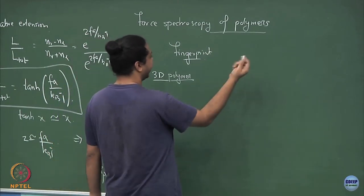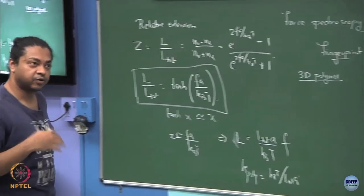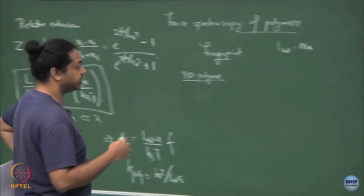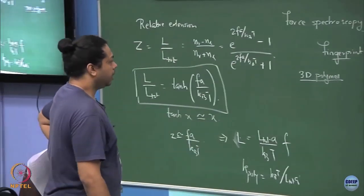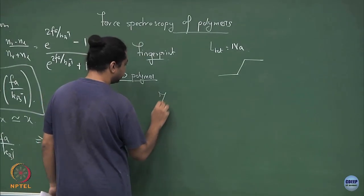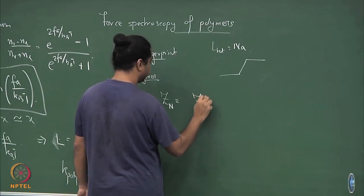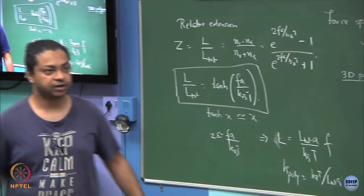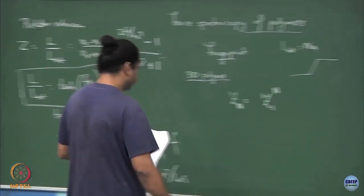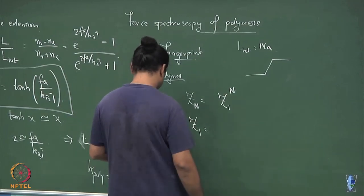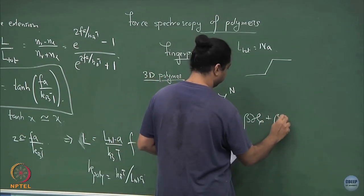For a 3D polymer with N links and L_total = N·a, assuming an ideal freely jointed chain with no interactions between segments, the partition function Z_N is just the single-particle partition function Z_1 raised to the power N — exactly like an ideal gas. Z_1 is the integral of e^(β F a cos θ) over all orientations: integrating over φ from 0 to 2π and θ from 0 to π.